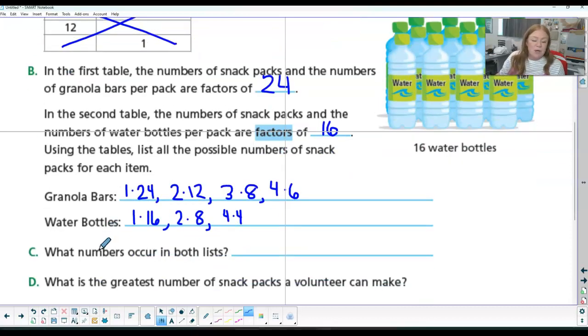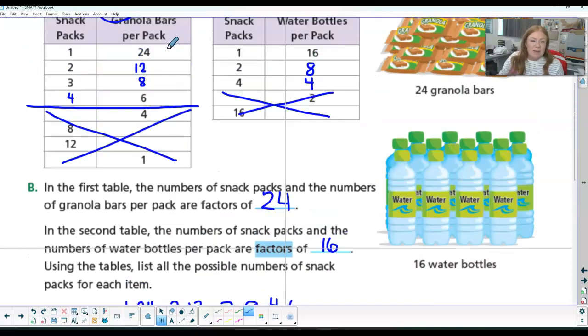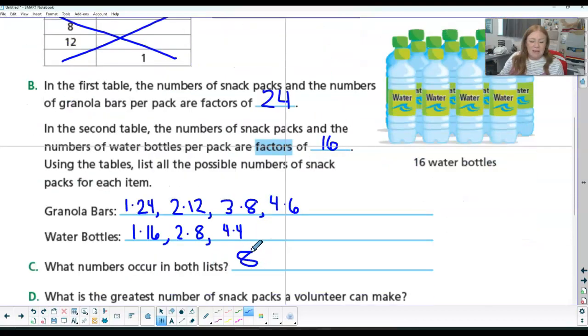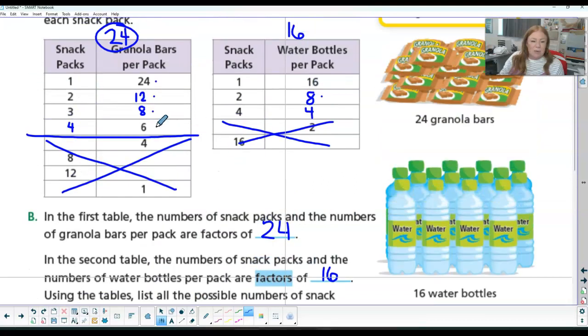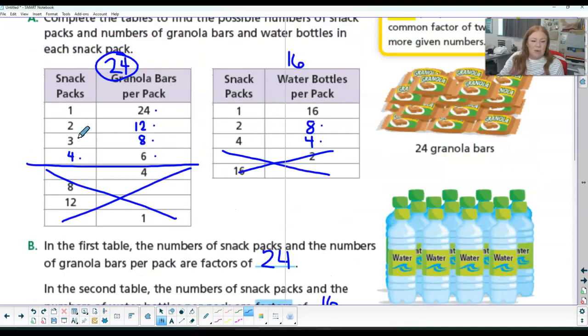So now it wants to know which ones occur on both lists. So I'm going to come look at my list. Do they both have a 24? No. Do they both have a 12? No. Do they both have an 8? Yes, they do. I'm going to add that to my list. Do they both have a 6? No. Do they both have a 4? Yes. Do they both have a 3? No. They both have a 2 and they both have a 1.